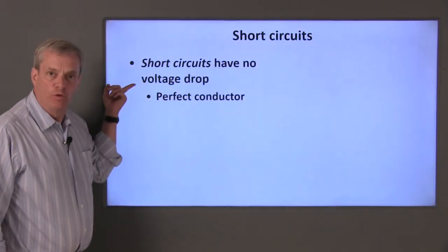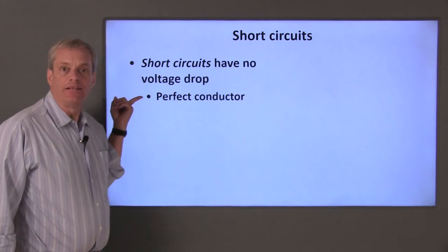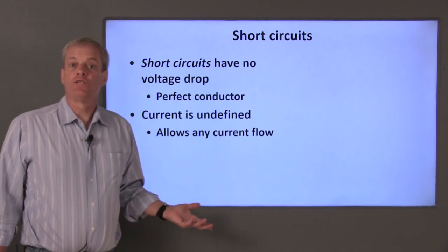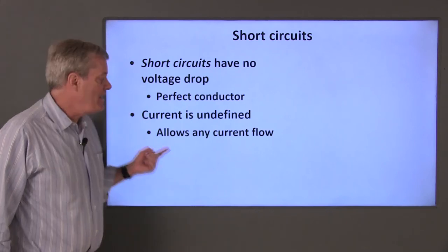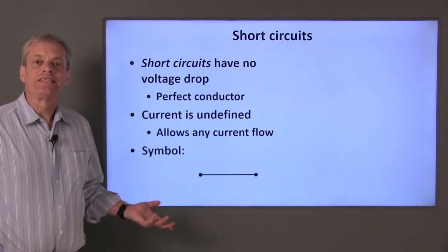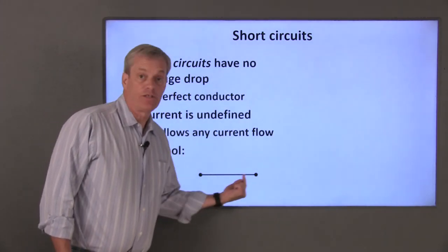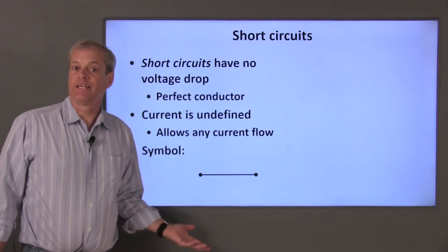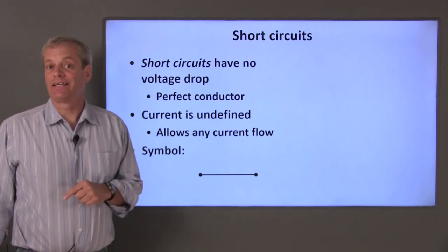A short circuit has no voltage difference between its terminals, which is exactly the same as a perfect conductor. Since there's no voltage difference, no energy is required to move charge through a short circuit, so any amount of current can flow through it. The circuit symbol for a short circuit is just a line or wire connecting its terminals — the same symbol used for perfect conductors that interconnect elements, since they're mathematically exactly the same.